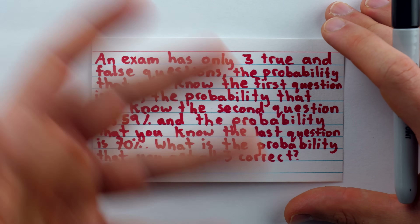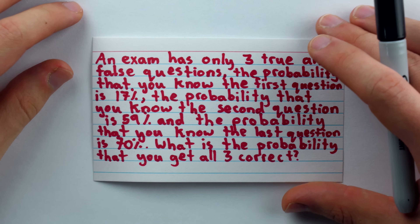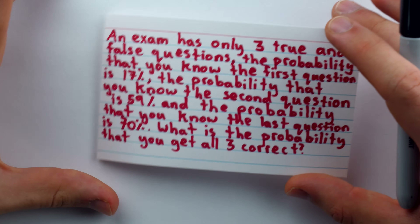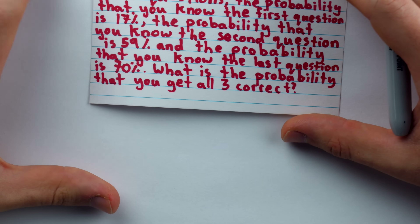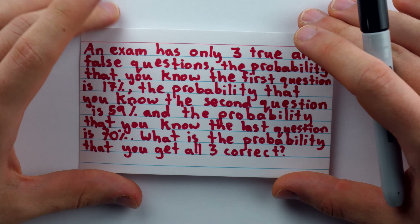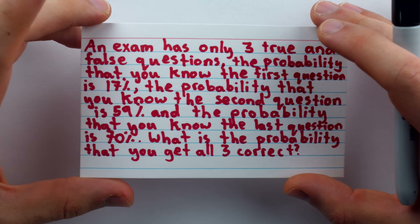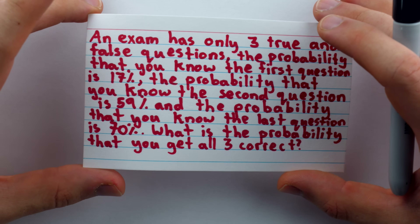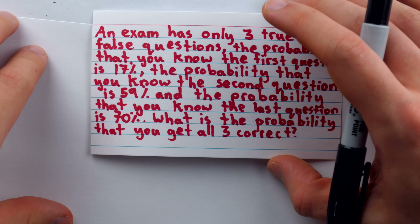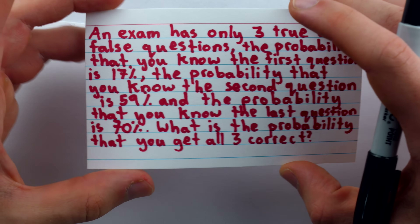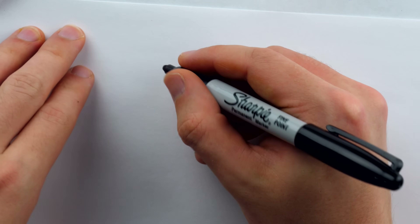With the preliminary whining out of the way, let's get to the meat and potatoes. How did the professor say this question should be answered? He gave the most obvious solution you may be thinking: what's the probability that we get all three questions correct? We'd take the probability that we get the first question correct, which is 17%, or 0.17.